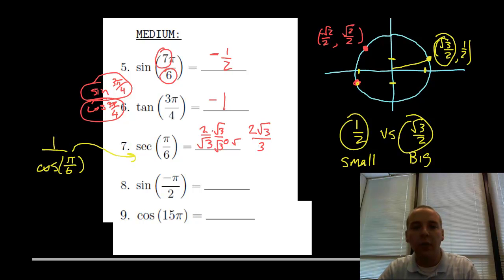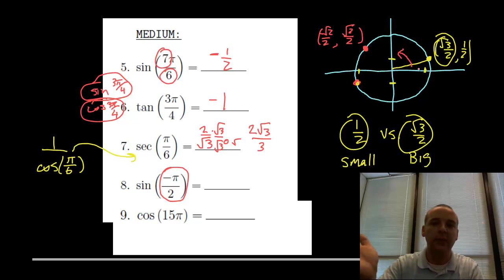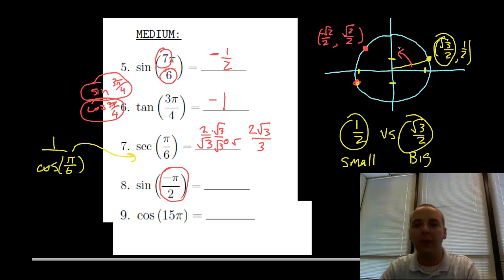Normally the angles we provide are 0 to 2pi, but they don't have to be. In this case, negative pi over 2. We know pi over 2 is basically 90 degrees - you move from the positive X axis upwards to pi over 2. If it's negative pi over 2, you just go backwards. That angle would go down, and right here is negative pi over 2. The sine of negative pi over 2, the Y value, is clearly negative 1.